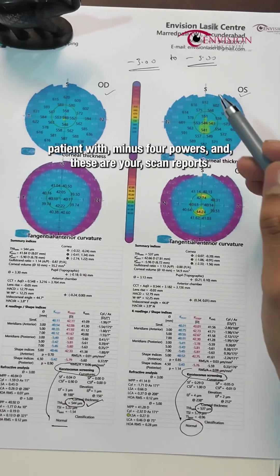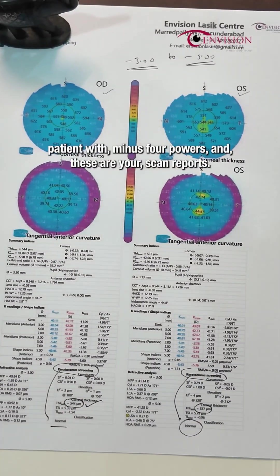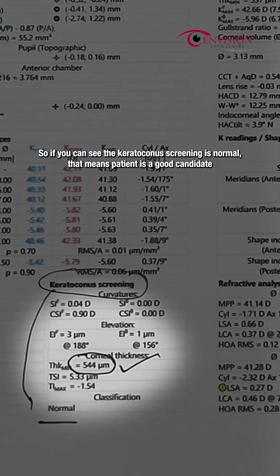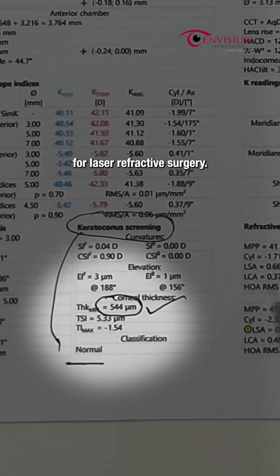So let's say you're a patient with minus 4 power and these are your scan reports. If you can see, the keratoconic screening is normal. That means the patient is a good candidate for laser refractive surgery.